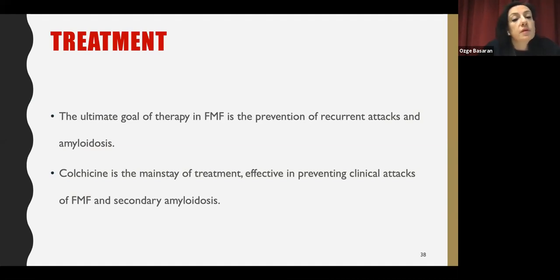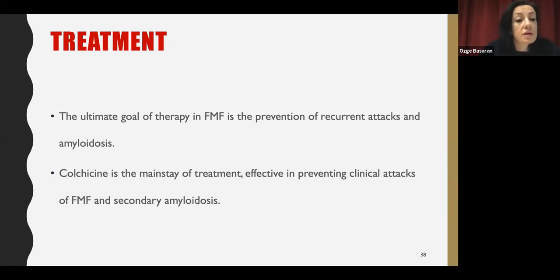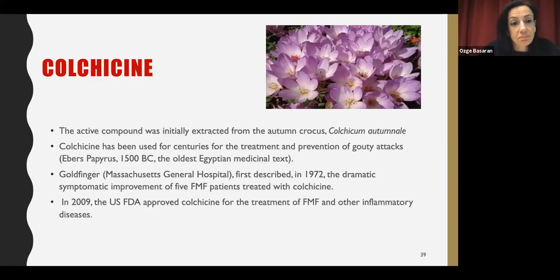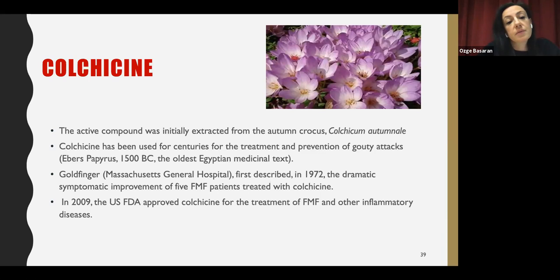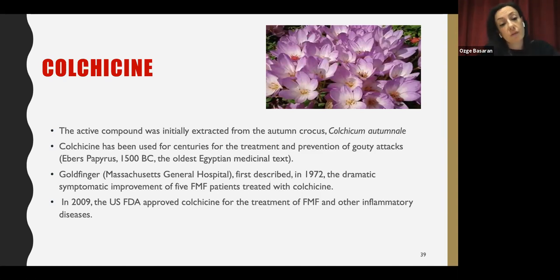The ultimate goal of therapy in FMF is prevention of recurrent attacks and amyloidosis. Colchicine is the mainstay of treatment and is very effective in preventing clinical attacks and secondary amyloidosis. The active compound was initially extracted from the autumn crocus, Colchicum autumnale. Colchicine has been used for centuries for gout, and in 1972 Goldfinger first described dramatic symptomatic improvement in FMF patients treated with colchicine. In 2009, the FDA approved colchicine for treatment of FMF and other inflammatory diseases.